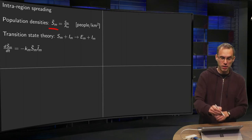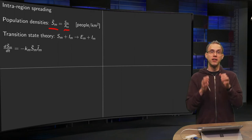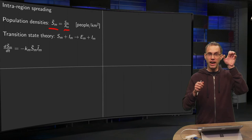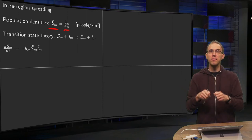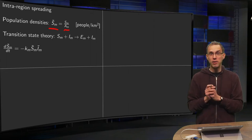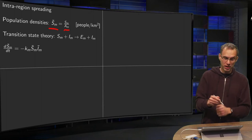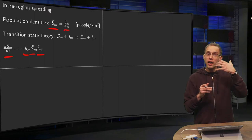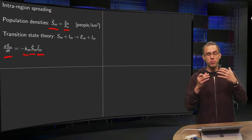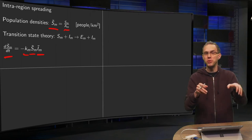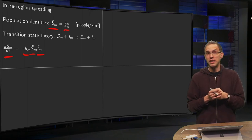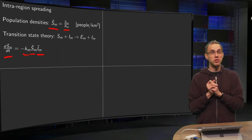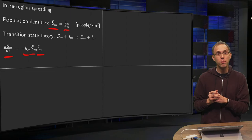First of all, we define the population densities with the tildes. SM tilde is SM divided by AM, so those are people per kilometer squared, where AM is the area of your region. Then we take a look at transition state theory. If you have, say, a chemical reaction where an S and an I collide together to form an E and an I, this is a typical chemical reaction. Then we know how the reaction rate is given in such a case from chemistry. And in that case, your dSM/dt equals minus KM times SM tilde times IM tilde. We can use that idea for our intra-region spreading.